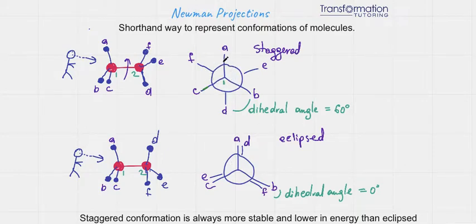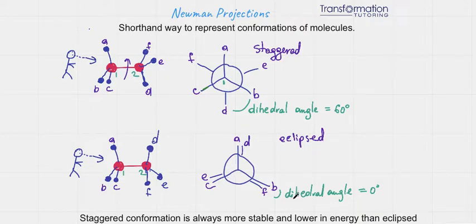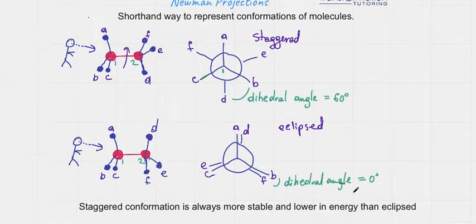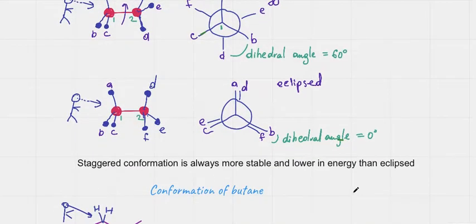The first conformation, where groups are as far apart from one another as possible, is called staggered. In staggered conformation, the dihedral angle between the substituents is 60 degrees. The conformation where groups are right behind one another is called eclipsed, and here the dihedral angle is zero degrees. Staggered conformation is always more stable and lower in energy than eclipsed. So if asked to draw the most stable conformation, it must be staggered; the least stable must be eclipsed.